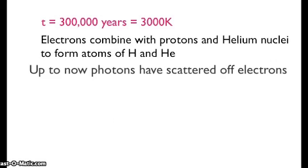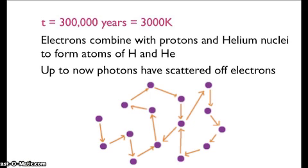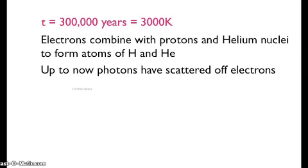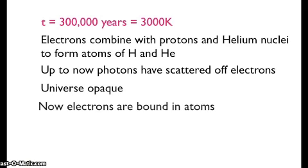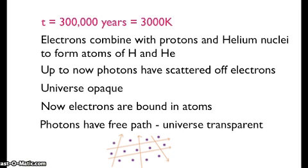Up to this point, photons had been continually scattering off the free electrons. Photons were continually giving their energy to electrons, which were then continually emitting fresh photons. This continuous interaction meant that light could not penetrate the universe, which was consequently opaque. Once the electrons were bound into atoms, the photons were free to travel through the universe, which then became transparent.